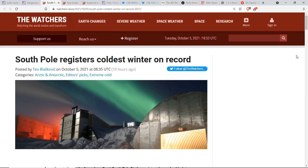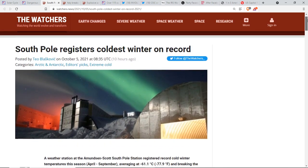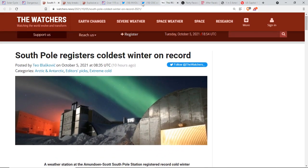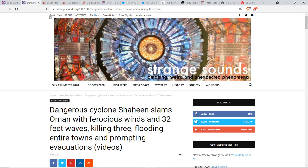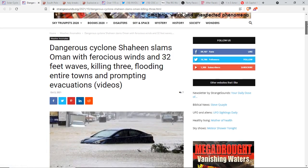South Pole registers coldest winter in record, but the records only go back to 1957, right? So, yeah, when we're talking about the bigger scheme of things and natural cycles, and then how about the unnatural cycles that are implemented at various different intervals?